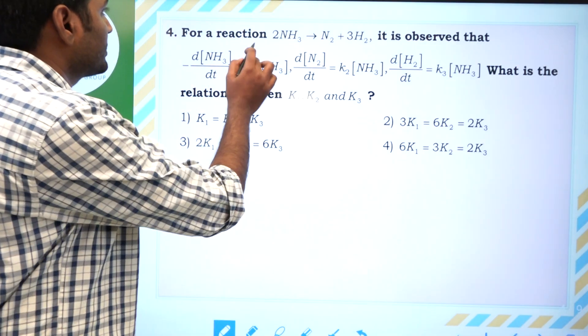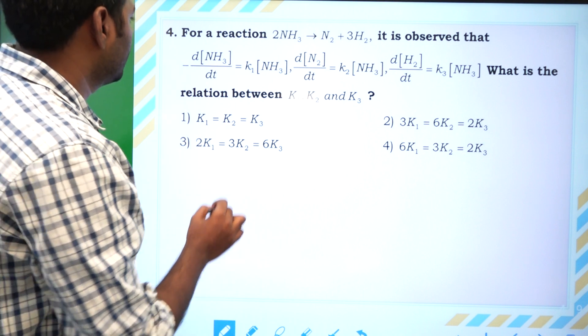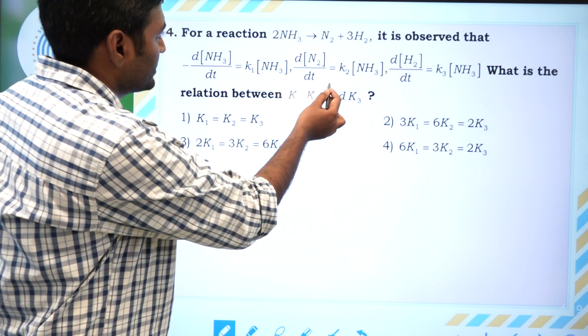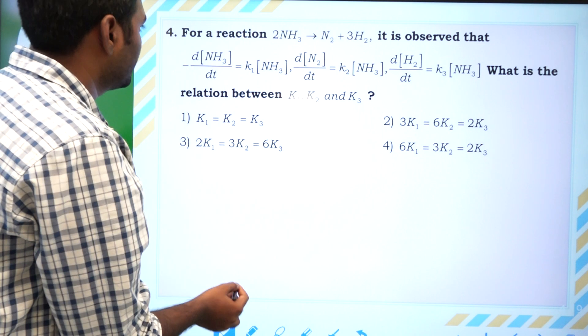For a reaction 2NH3 gives N2 plus 3H2, it is observed that d[NH3]/dt is K1, d[N2]/dt is K2, and d[H2]/dt is K3. Now, what is the relation between K1, K2, and K3?